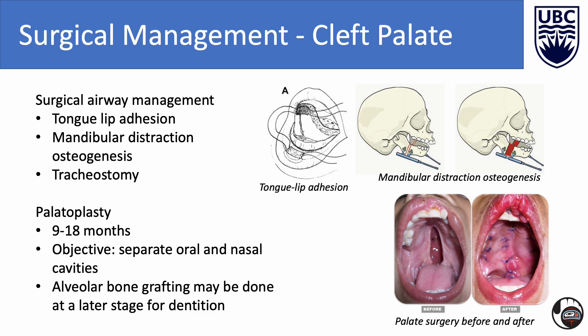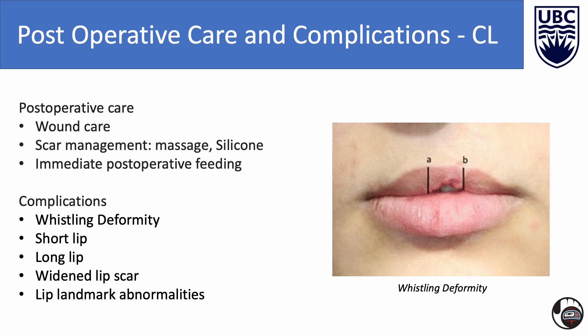After cleft lip surgery, wound care is followed by scar management with massage and silicone sheeting, and feeding can happen immediately after surgery. The most common complications of correcting a cleft lip include whistling deformity, short lip, long lip, a widened lip scar, or lip landmark abnormalities.